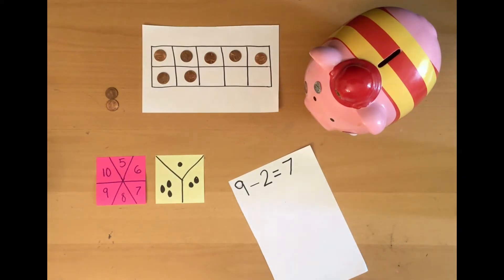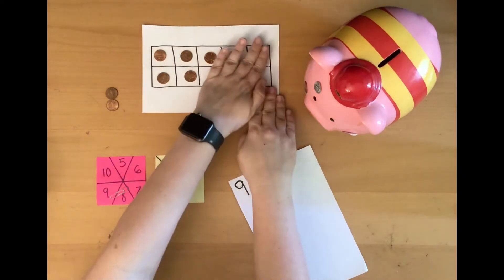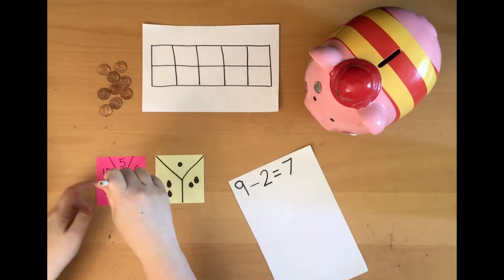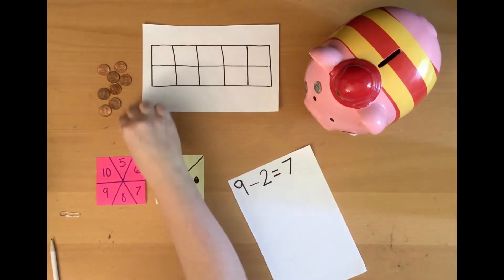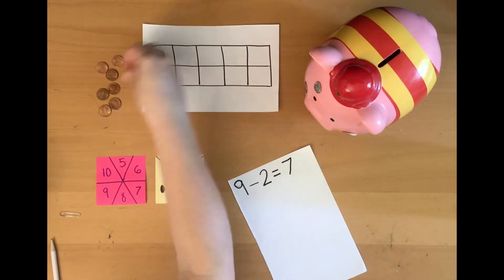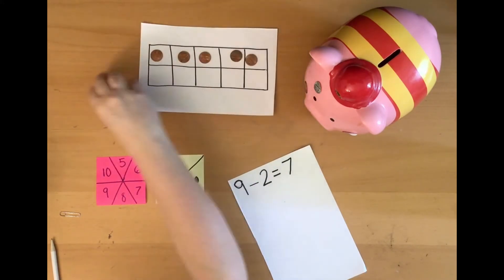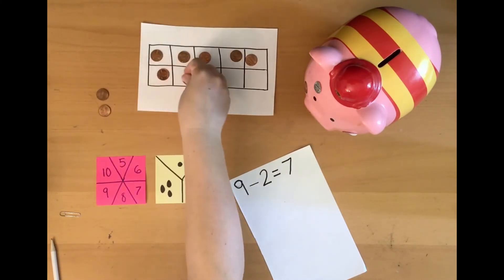All right. Let's try another one. I'm going to spin my spinner after I clear my pennies off. All right. Let's see how many this time. 7. Oh, that's what we had before. So I know I need 5, 6, 7.